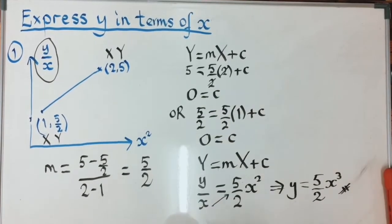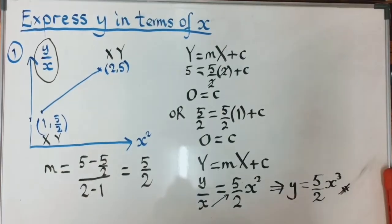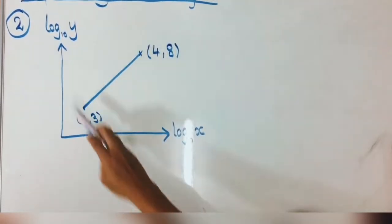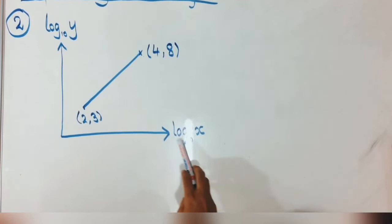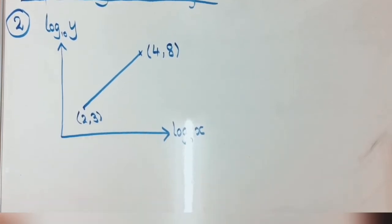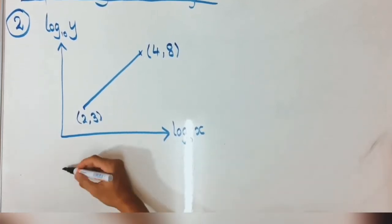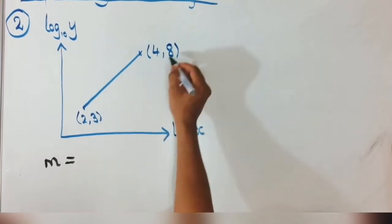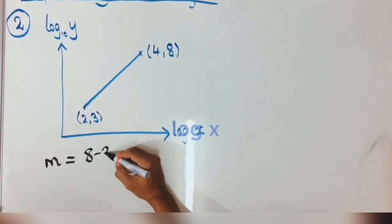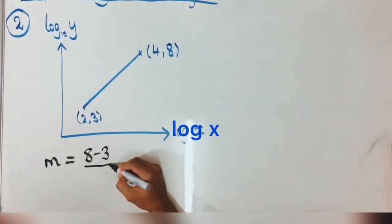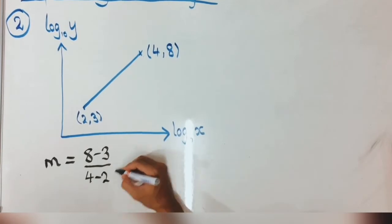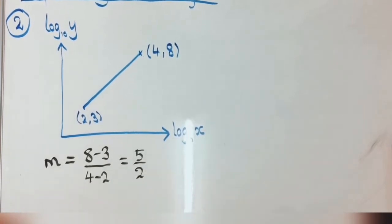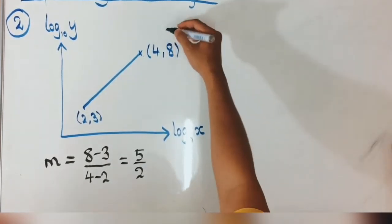Now for the second example. In the vertical axis you have log y, and in the horizontal axis you have log x. The first thing is to find the gradient: m equals (8 minus 3) over (4 minus 2), which gives 5/2. So the gradient is 5/2 again.